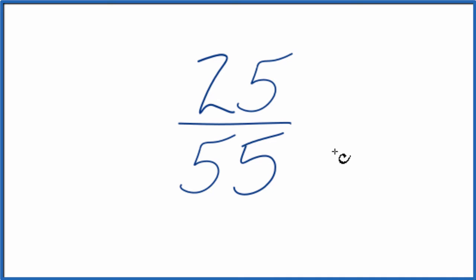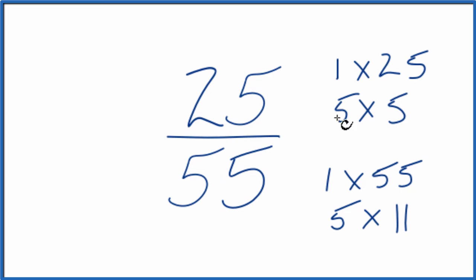Now to do that, what we need to do is find a common factor, something that goes into 25 and 55. So here are the factors for 25 and 55. So the greatest common factor, that's going to be 5.